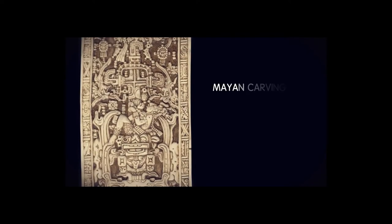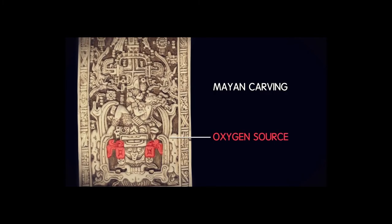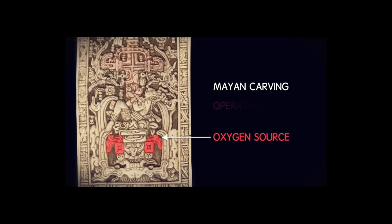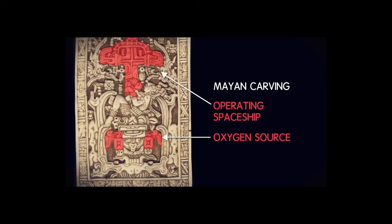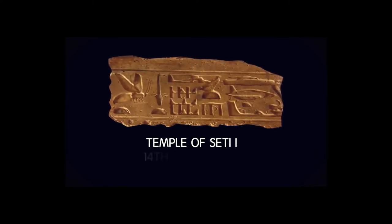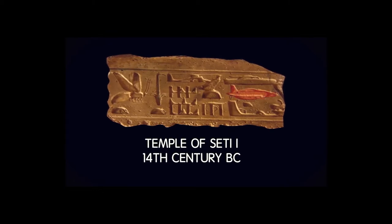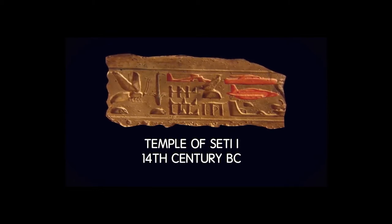Here is a drawing of a Mayan carving that shows a man attached to what some construe as an oxygen source as he operates controls in what appears to be a spaceship. Other fascinating objects include this hieroglyph from the Temple of Seti I that dates back to the 14th century BC. The glyph appears to contain hovering spacecrafts and modern-day flying machinery such as helicopters.